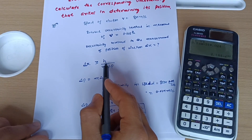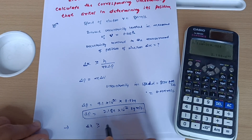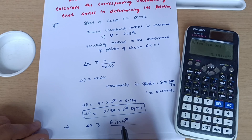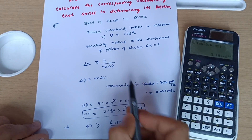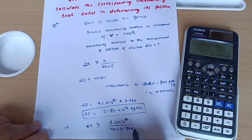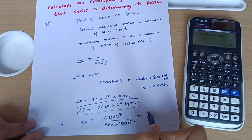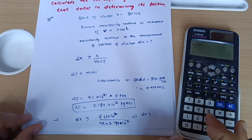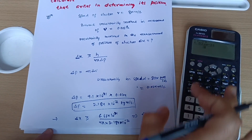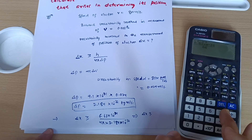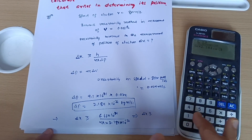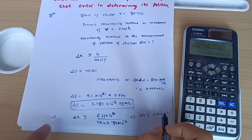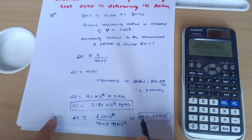Now putting these values into the Heisenberg formula: delta x is greater than or equal to h divided by 4 pi times delta p. Here h equals 6.63 × 10⁻³⁴ and delta p equals 2.184 × 10⁻³². Calculating this gives delta x greater than or equal to 2.41 × 10⁻³ meters. So 2.41 × 10⁻³ is the uncertainty involved in the measurement of position.